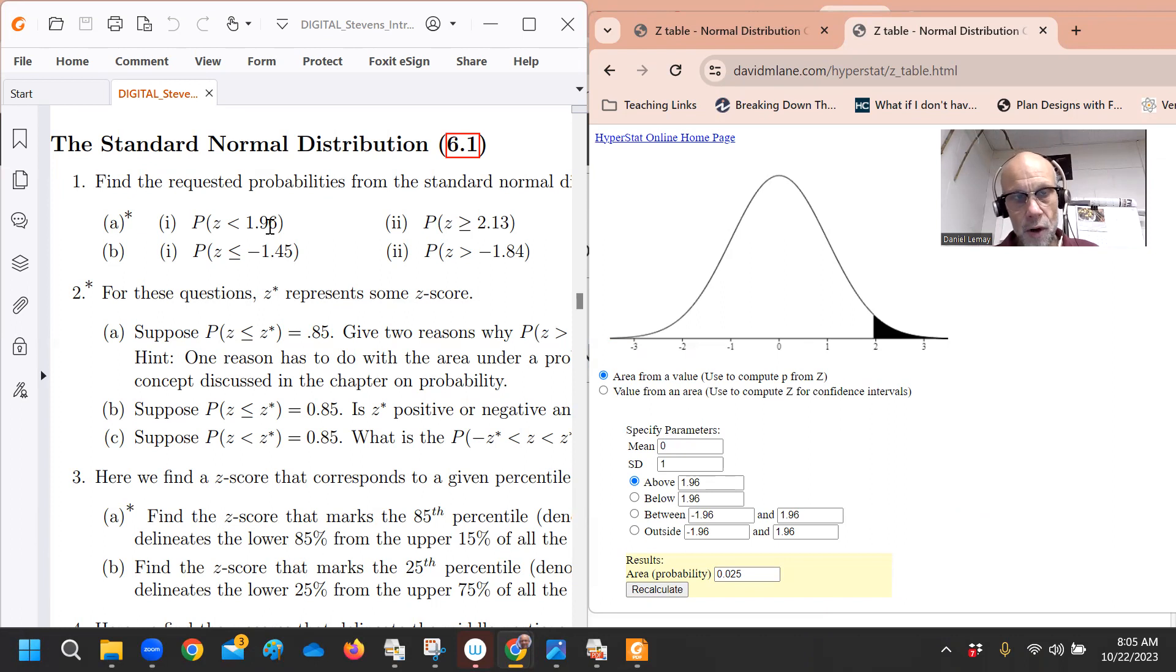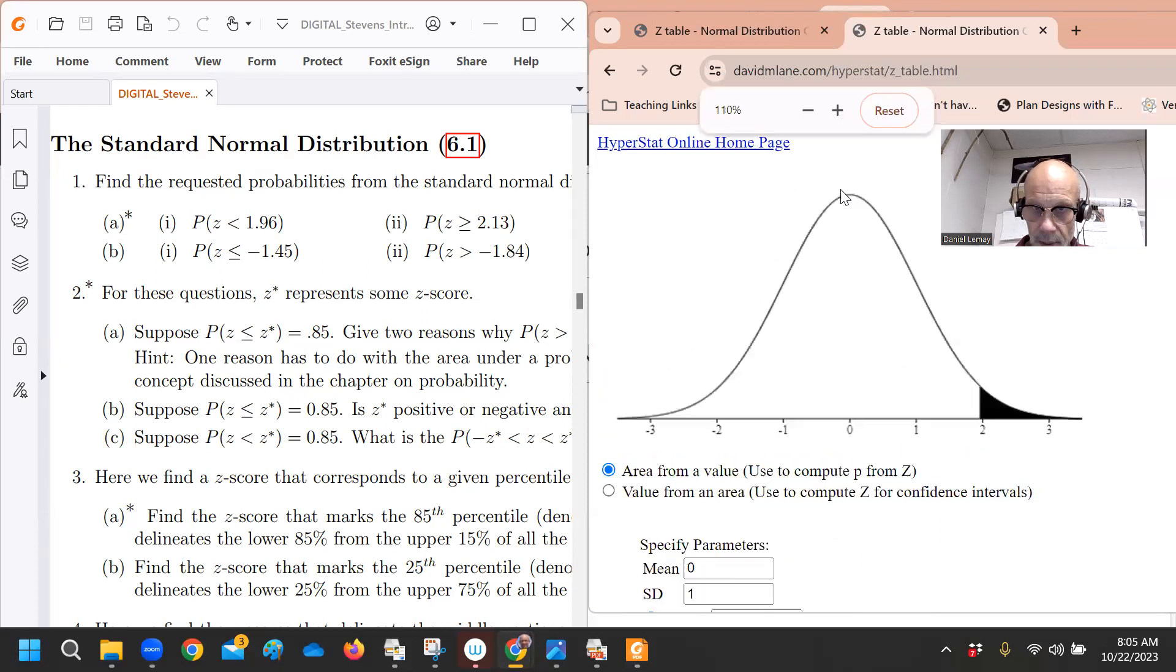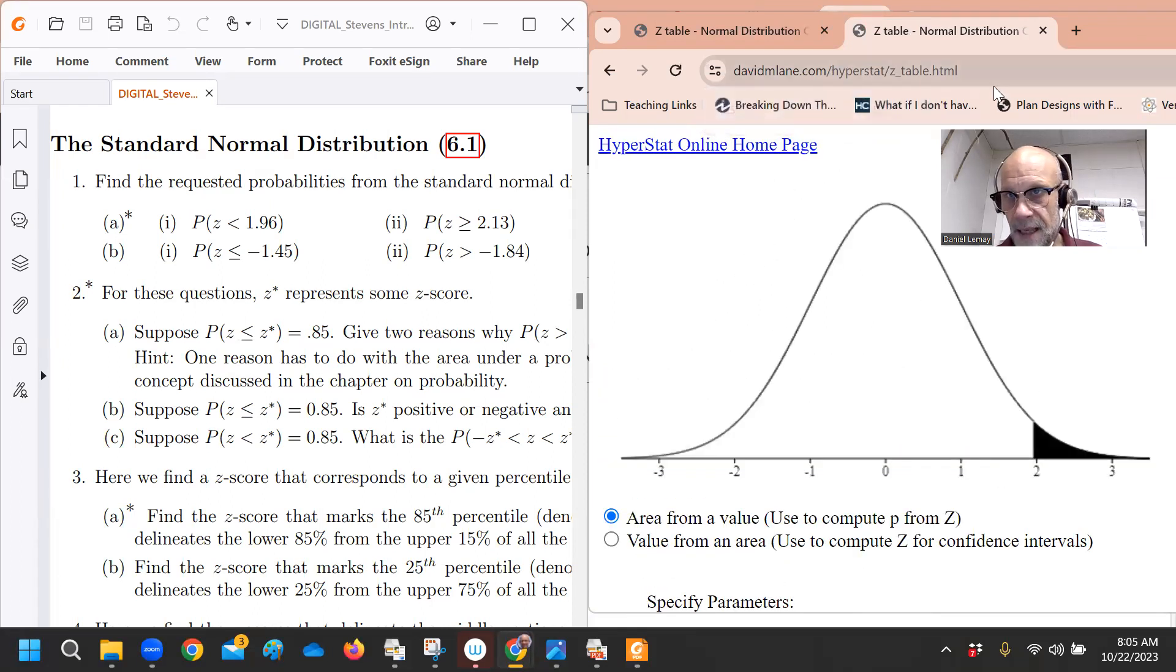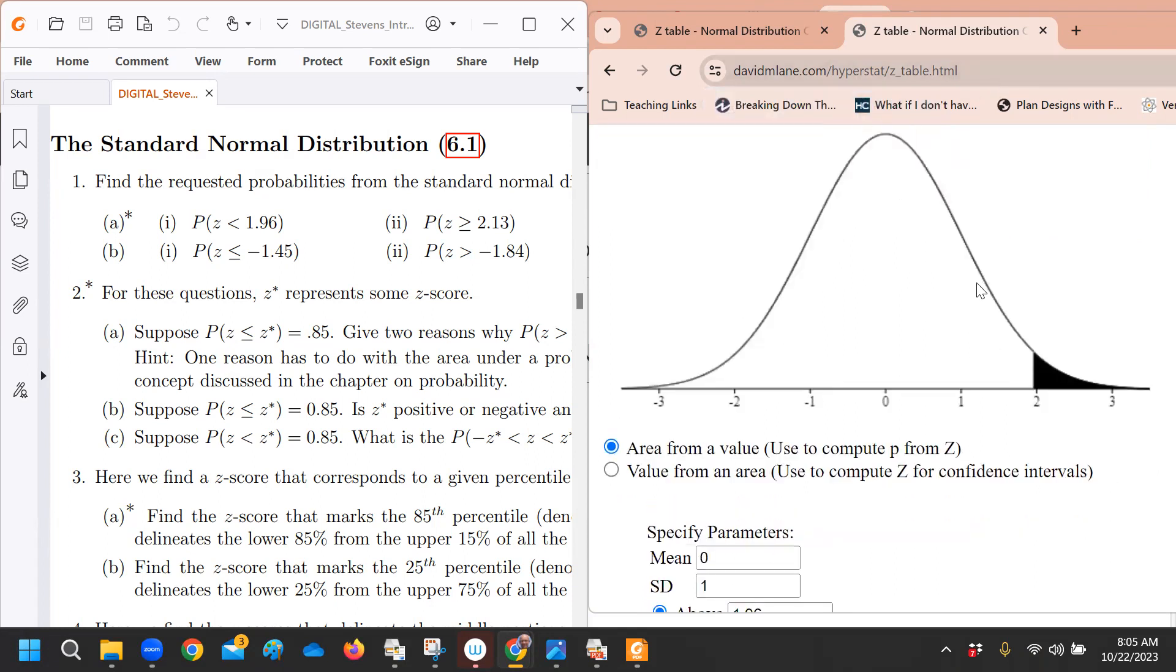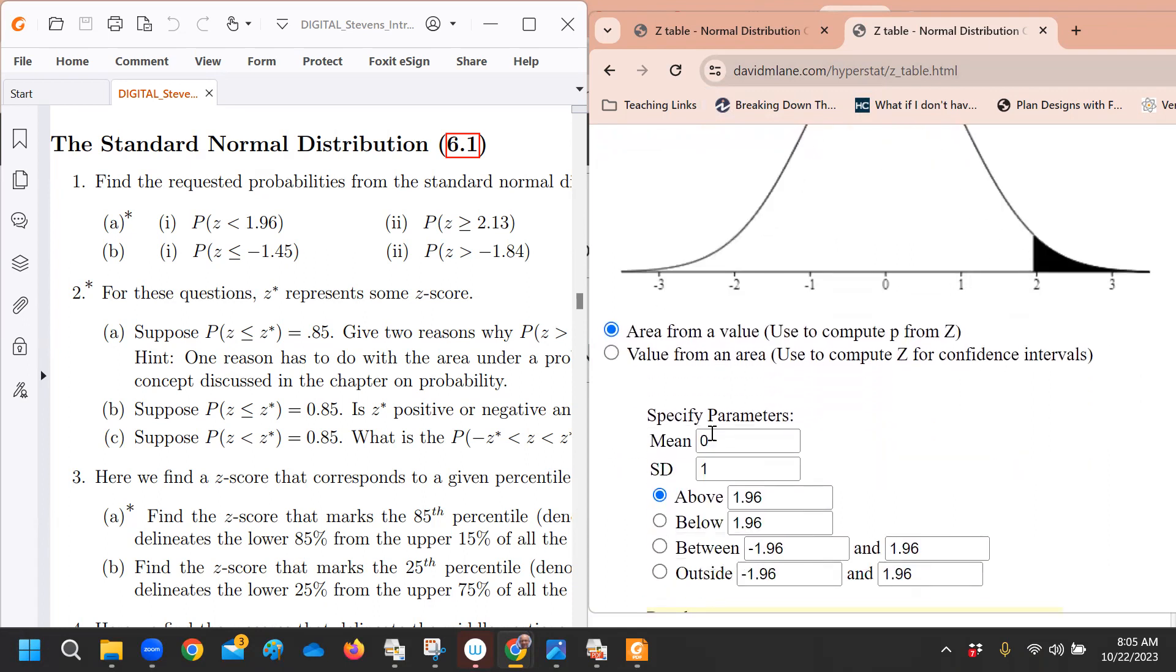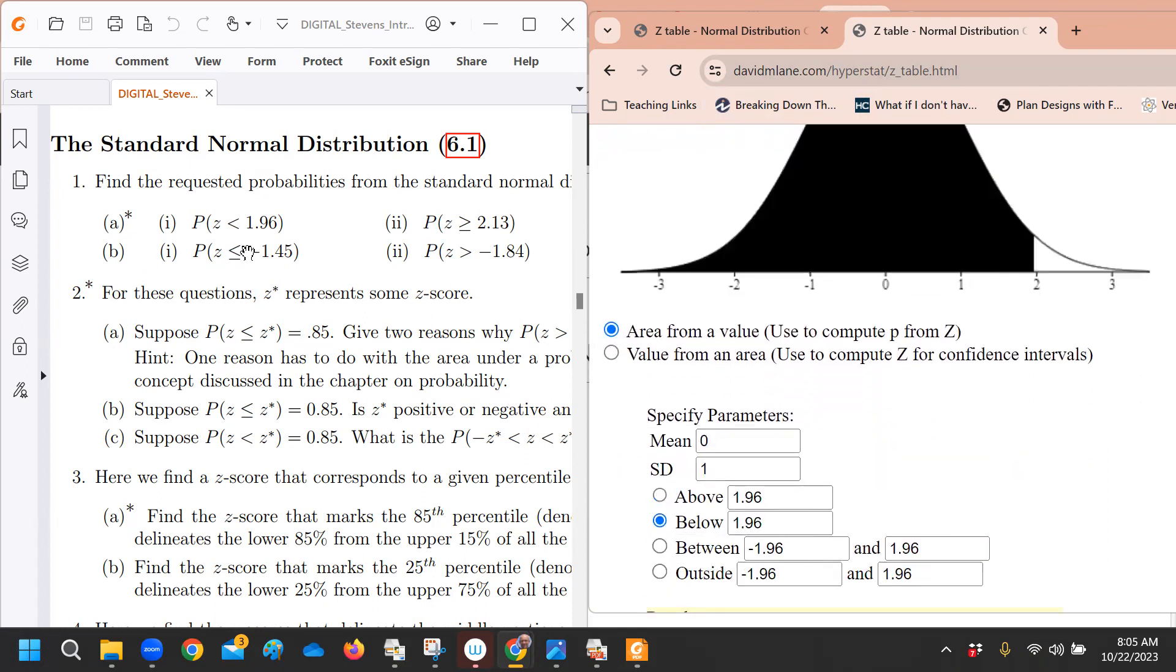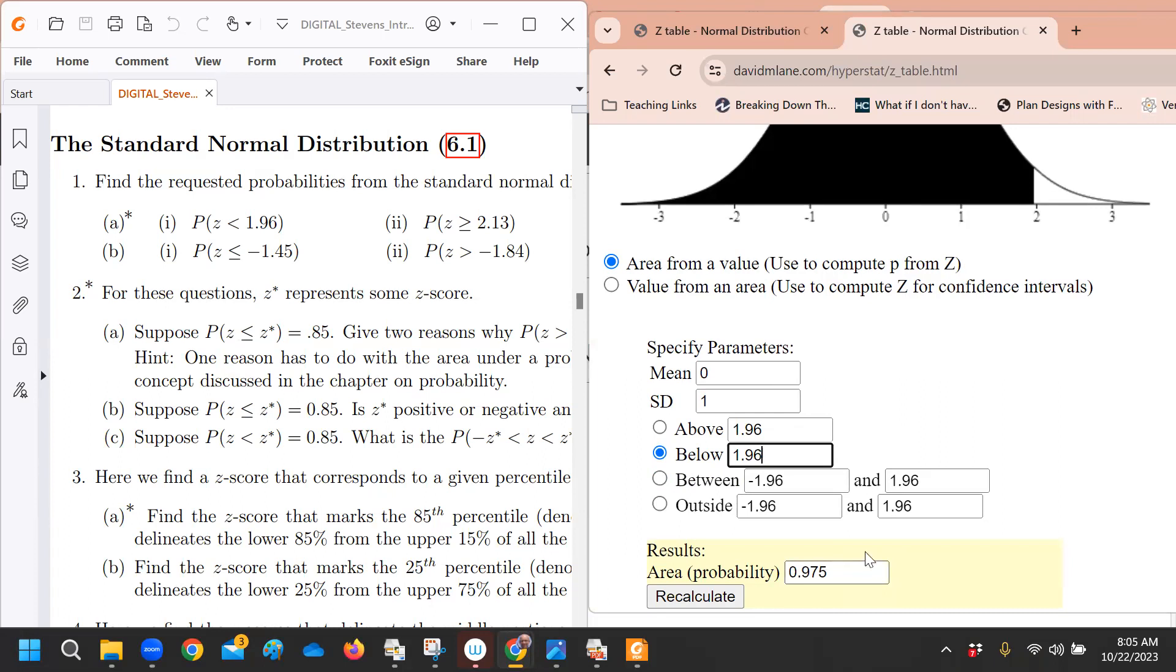We're on the standard normal curve, which means we're working with Z-scores. The mean is zero, the standard deviation is one. If they're asking us for the probability of getting a Z-score less than 1.96, you just go to this calculator. Let me see if I can zoom this page in a little bit. What I really like about this, it gives us a picture of what we're looking for. This says less than 1.96, and there's the probability. Instead of having to go look that number up in the normal curve table, there's the answer.